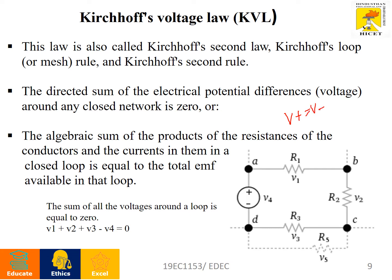The sum of potential rises equals the sum of potential drops. A voltage rise occurs when tracing from the negative terminal to the positive terminal. A voltage drop occurs when tracing from the positive terminal to the negative terminal. For a closed loop, V1 + V2 + V3 − V4 = 0. KVL states that the sum of voltages around any closed path equals zero.